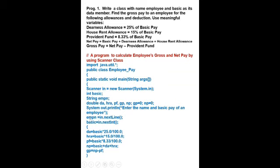Employee name is a string, so empn = in.nextLine(). Basic is in int form, so basic = in.nextInt(). Now curly bracket start. We will put the formulas given in the problem. First, find dearness allowance: da = basic * 25 / 100. Then HRA: hra = basic * 15.0 / 100. PF = basic * 8.33 / 100.